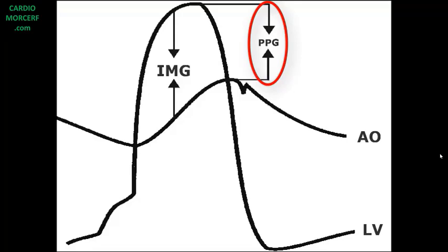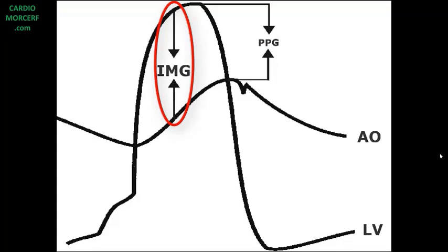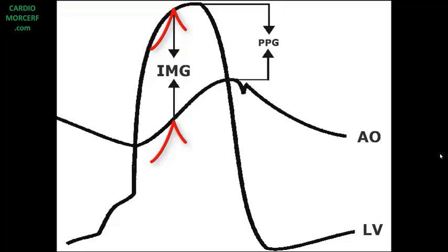Doppler does not give this gradient, but rather the maximal instantaneous gradient between the left ventricle and aortic pressure. At the moment when the maximal gradient occurs, the maximal Doppler velocity — and hence the maximal gradient — is recorded. Notice that this gradient is a real one, while the peak-to-peak gradient does not really exist, since it occurs at different points in time.